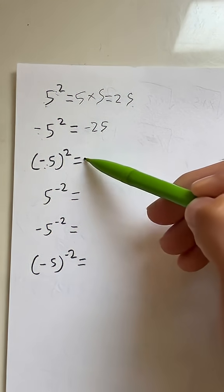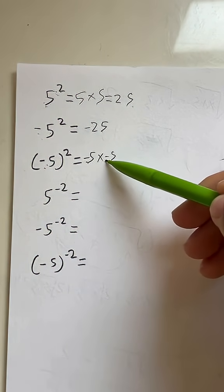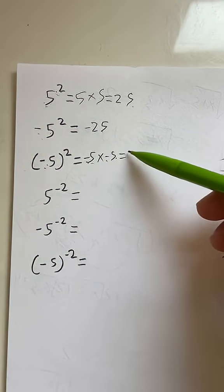But when it's inside the parentheses, this basically means negative 5 times negative 5. Negative times negative is positive. 5 times 5 will give us positive 25.